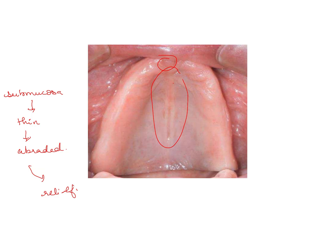A second reason why the mid palatine raphae is a relief area is that if it is very prominent, it acts like a fulcrum — like a seesaw — causing the denture to rock. Therefore, you do not want a very tight-fitting, thick contact between the mid palatine raphae and the complete denture.